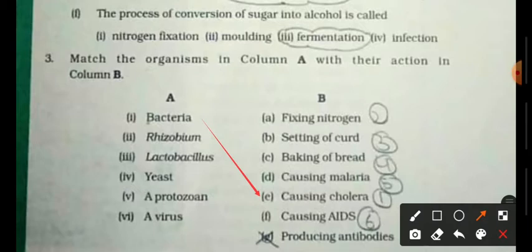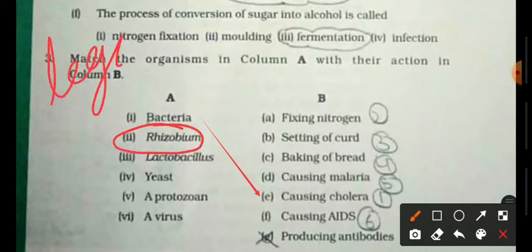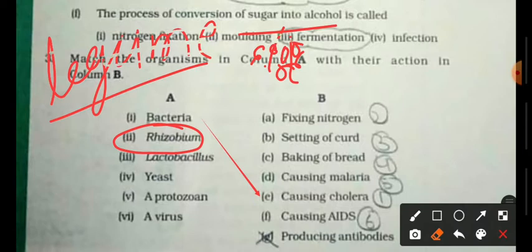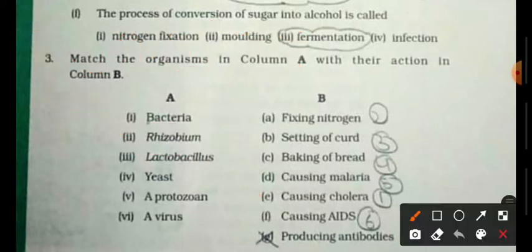Rhizobium, where is it present? Present in legume plants. Which plant is legume? In the roots as nodules they are present, and they do a particular process which will fix atmospheric nitrogen and convert it.